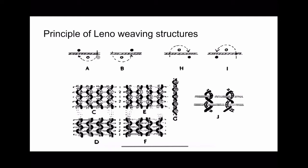If the standard yarn is forming the bottom shed, this mechanism is called bottom doping. The crossing yarn has to go from the bottom of the standard yarn. If the standard yarn forms the top shed, this mechanism is called top doping. Since bottom doping is much more convenient, it is mostly preferred, so from now on we will discuss about bottom doping only.